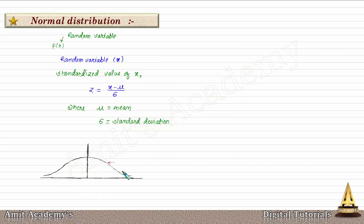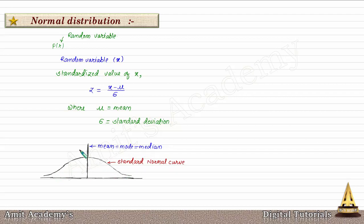This curve is called the standard normal curve, and the area under this curve gives the probability. The maximum area under this curve is 1. The curve is symmetrical about the central axis (mean = mode = median), so the area on the right-hand side is 0.5 and on the left-hand side is 0.5. At the center z = 0; values z = 1, 2, 3 on the right and z = −1, −2, −3 on the left.